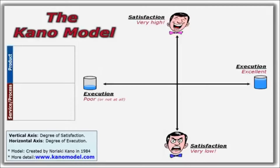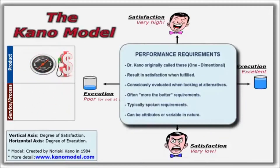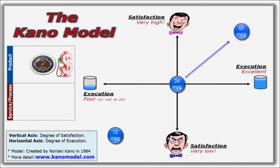We'll give you a product and service example to illustrate the three categories of requirements. Let's start with a product example: fuel economy on a car. The first of three types of requirements are called performance requirements. Performance requirements can both satisfy and dissatisfy the customer depending on how well they're executed. These requirements are at the top of your customers' minds and consciously evaluated when deciding which product or service to buy. Customers will typically speak easily about these needs when asked what's important. If the vehicle gets 12 miles per gallon, you'd likely be in the lower left of this model; 24 miles per gallon here, and 65 miles per gallon here.